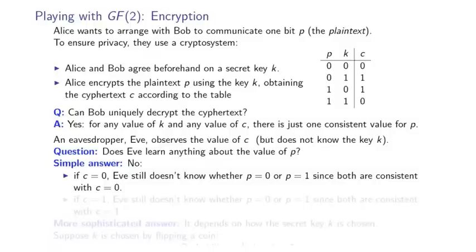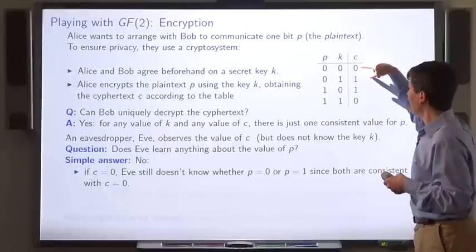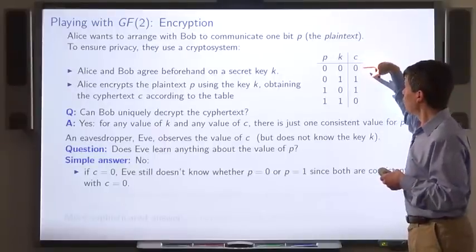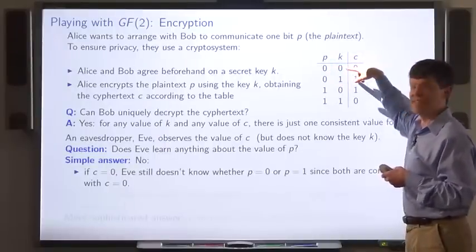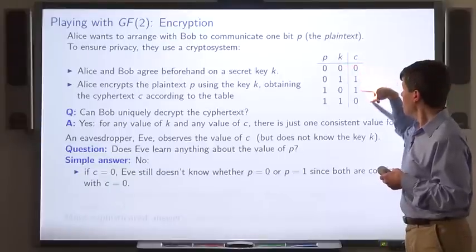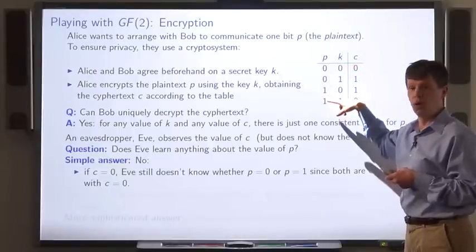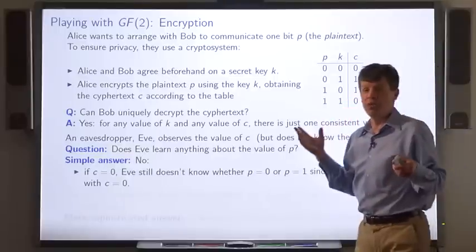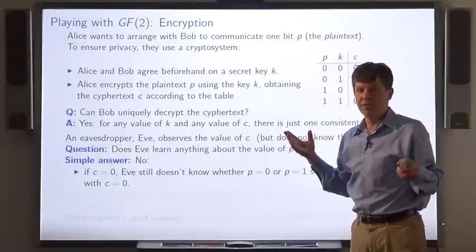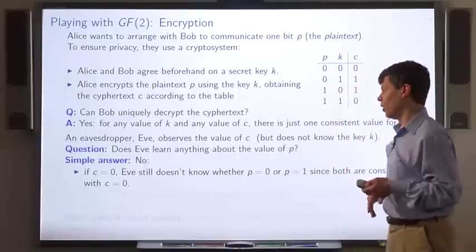Suppose that the ciphertext is 0. Remember, Eve doesn't know the key. She can look at this table and say, the ciphertext is 0, so maybe the plaintext is 0—that's the case if the key is 0. Or maybe the plaintext is 1 if the key is 1. Since she doesn't know whether the key is 0 or 1, she can't figure out whether the plaintext is 0 or 1.